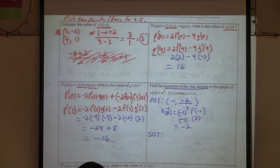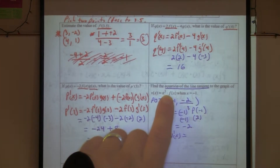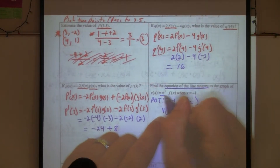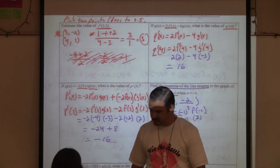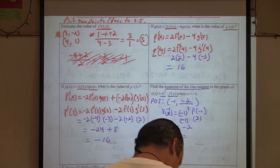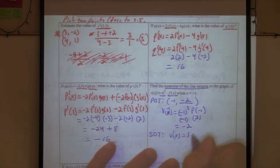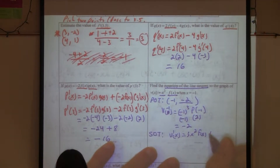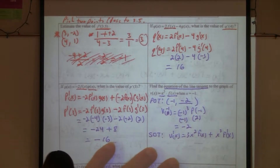We need the slope of the tangent line — that comes from the derivative. We don't have the derivative yet, so let's find it. v of x is the product of two functions, so we use the product rule. Derivative of x to the third is three x squared, times f of x, plus x to the third times f prime of x.